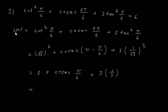So here we get root 3 square is 3, plus cosec(180 minus theta) is cosec theta — so this is cosec pi upon 6 — plus 3 into 1 upon 3. I get 3 plus cosec 30. Sin 30 is 1 upon 2, so cosec 30 is 2, plus the 3 and 3 cancel leaving 1. So this is 3 plus 3 equals 6, which is your RHS.